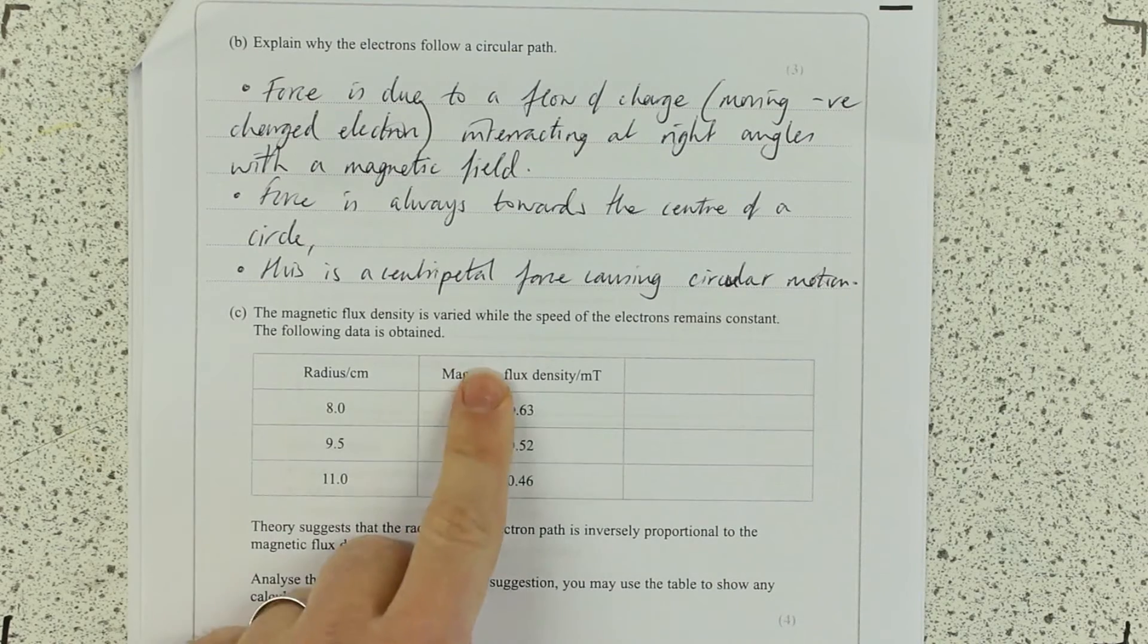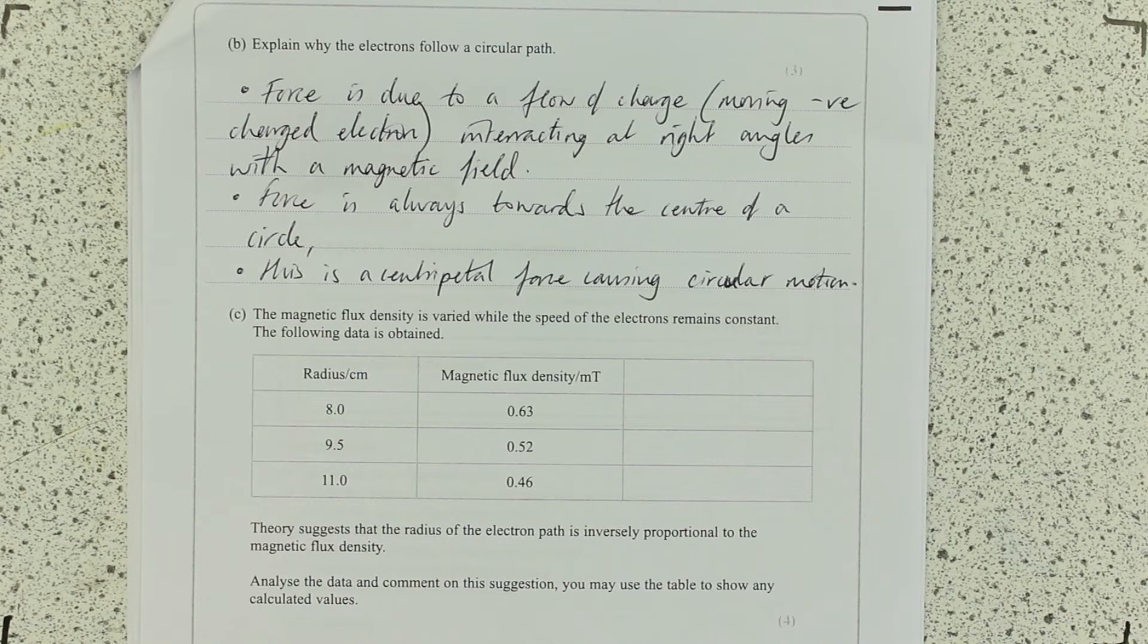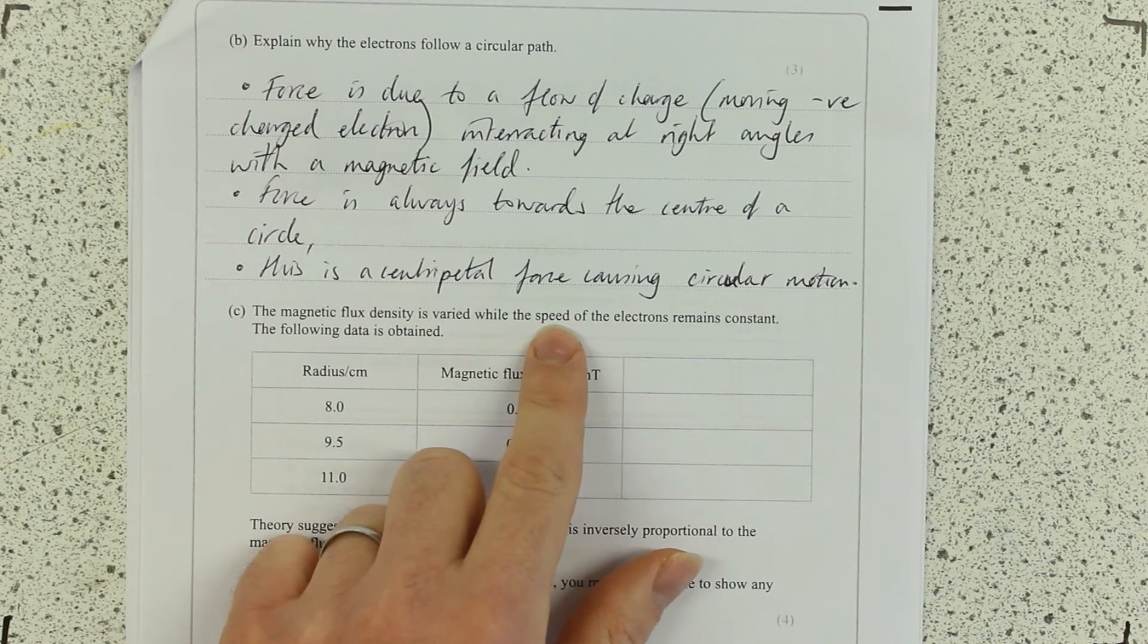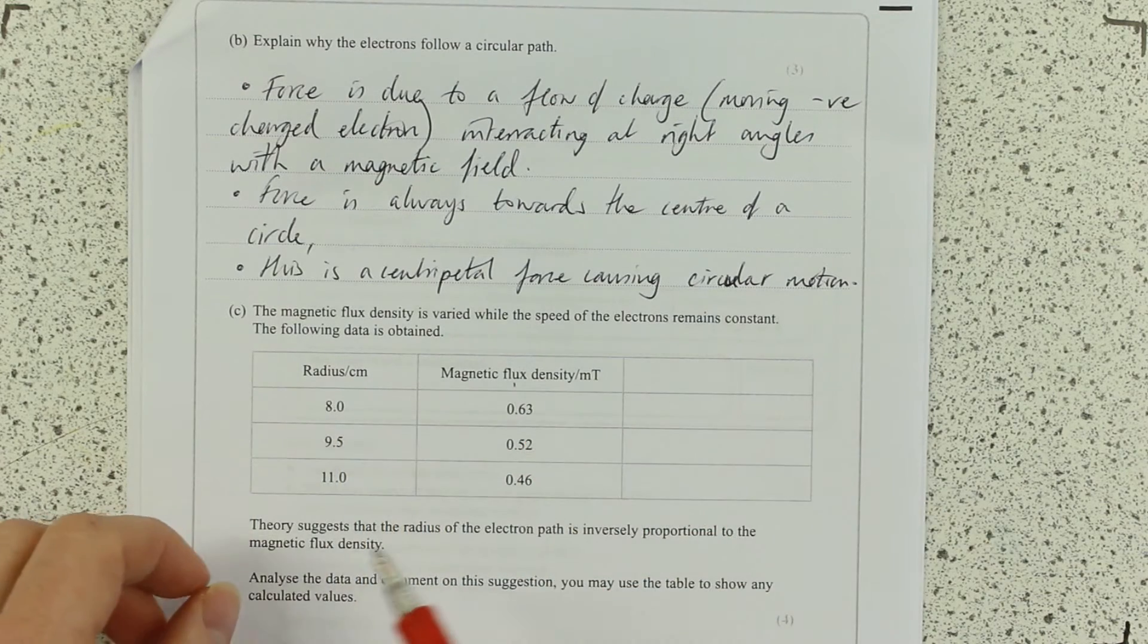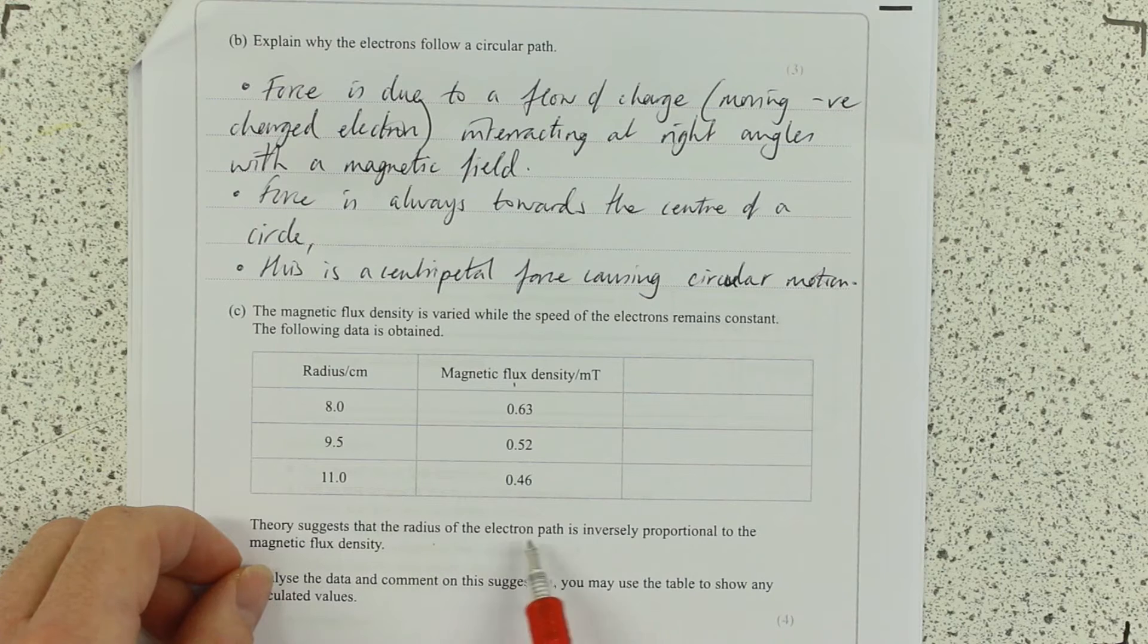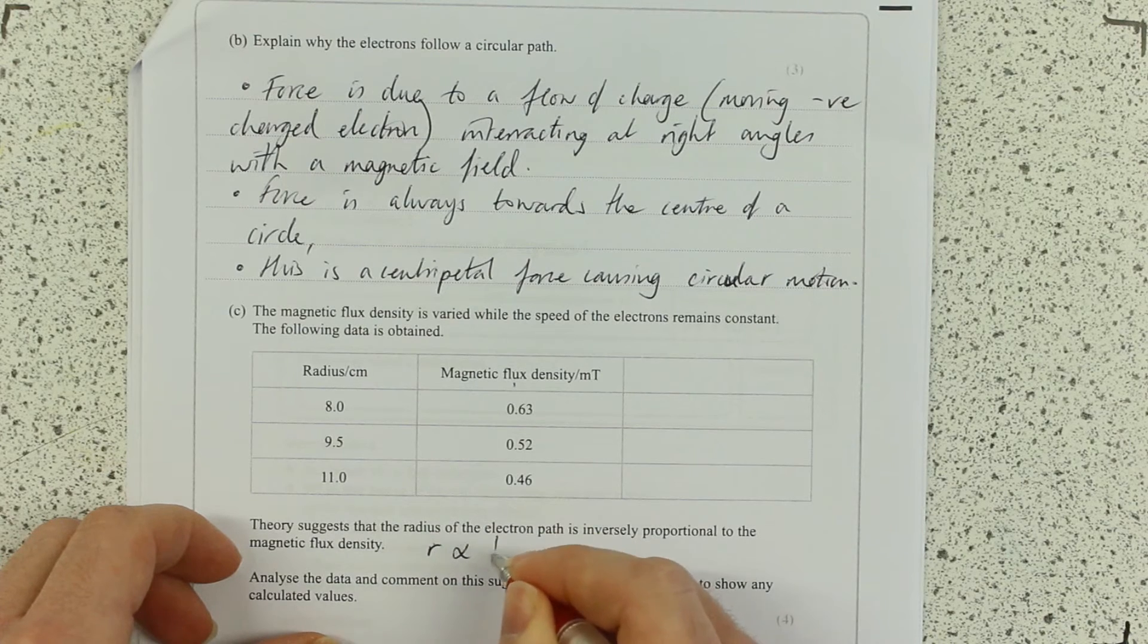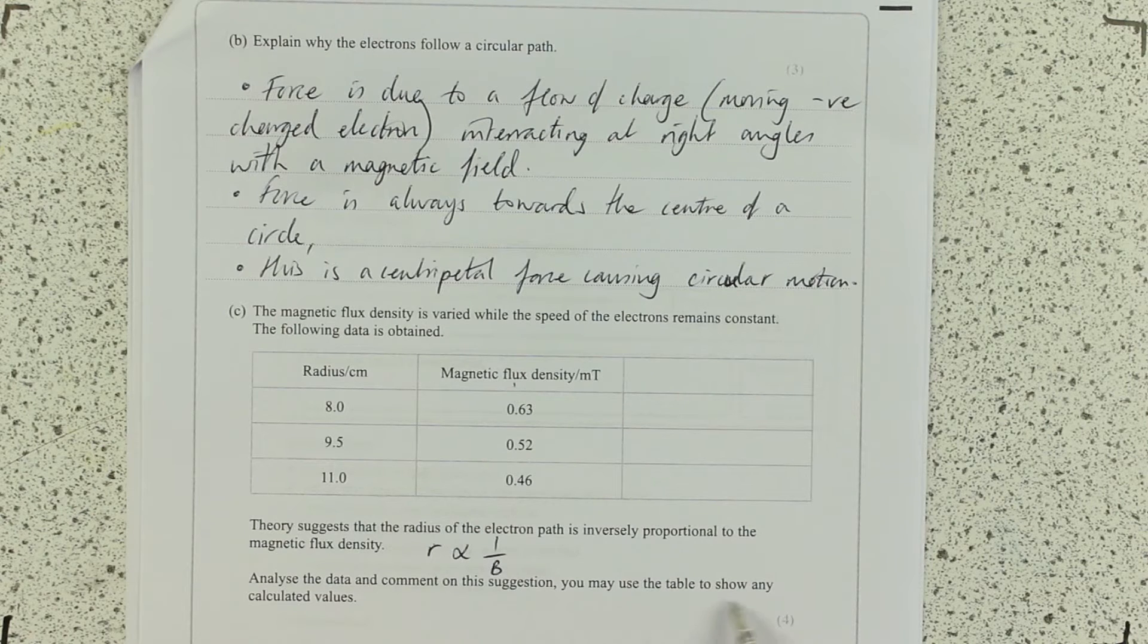Magnetic flux density is varied, while the speed of electrons remains constant. The following data is obtained. We know we're talking about motion in a circle now. We know that it depends on certain things. One of them is speed, another one might be mass. The theory suggests the radius of the electron path is inversely proportional to magnetic flux density. So, we're saying R is proportional to 1 over B.